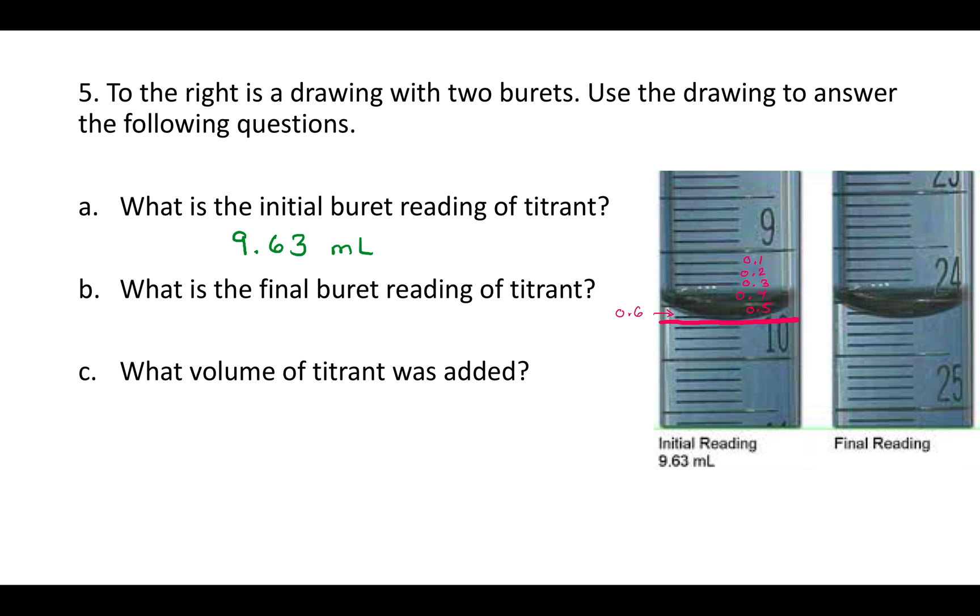B asks, what is the final burette reading of the titrant? Again, we're going to look at the bottom of the meniscus. Each of these lines is a tenth again. So, we have 24, 24.1, and it's a little bit below that. You can estimate beyond that because you don't have a line. It's not calibrated to that extent. So, you have 24.1, I'm just going to say 6 milliliters. That will be the final burette reading. Notice that the numbers increase as you go down on a burette. That's the reverse of what normally happens where the numbers increase as you go up in a piece of glassware.